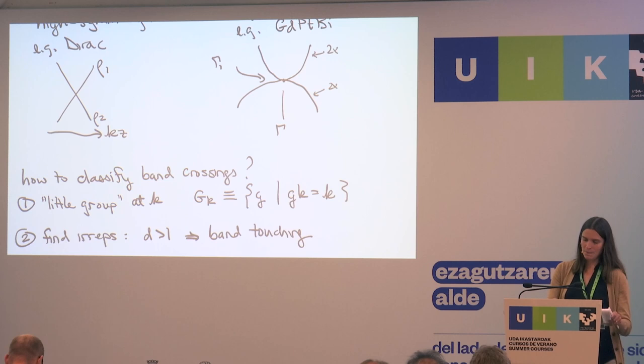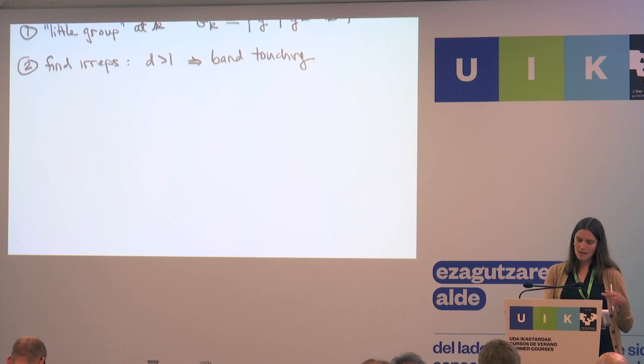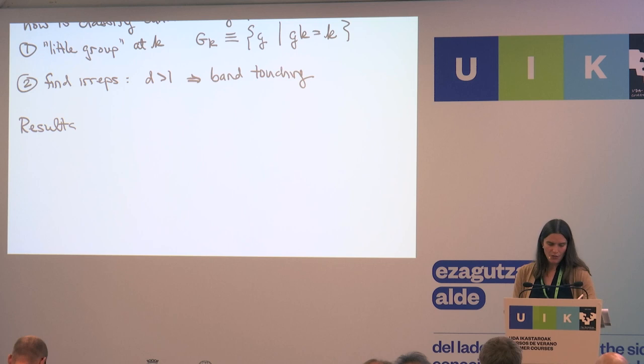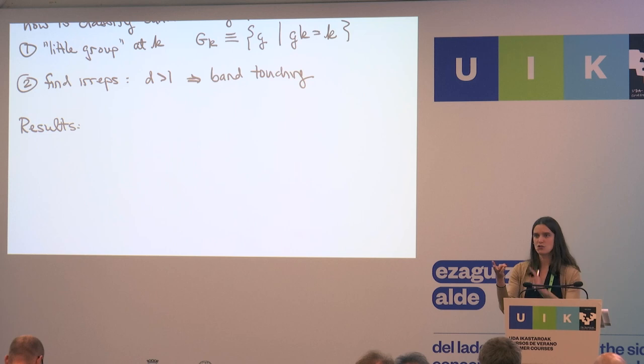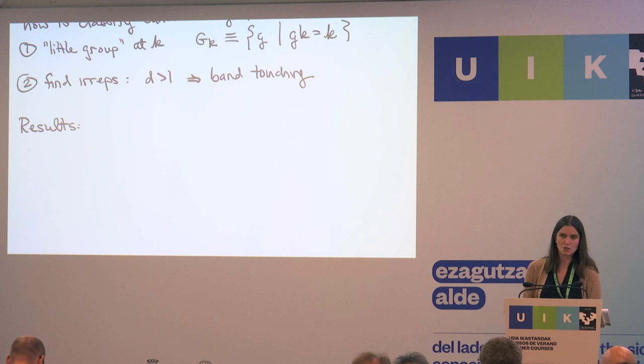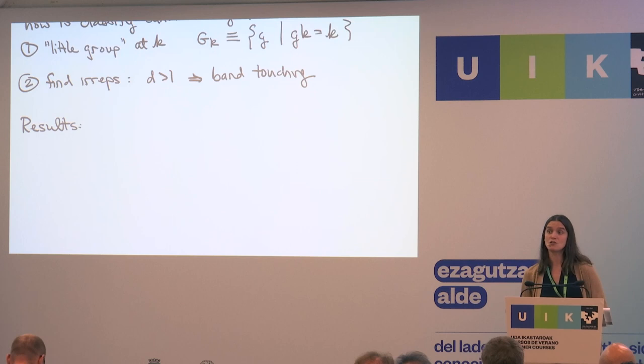We went through all this logic for all of the space groups and all of the high symmetry K points. The general result is that the only types of band crossings you can have are two-dimensional, three-dimensional, four-dimensional, six-dimensional, and eight-dimensional. Those are the only possibilities in crystals. There are only 230 space groups, and each one has a certain number of high symmetry K points, so it's just a matter of going through the lists. The possibilities of three, six, and eight are only possible in non-symmorphic space groups.